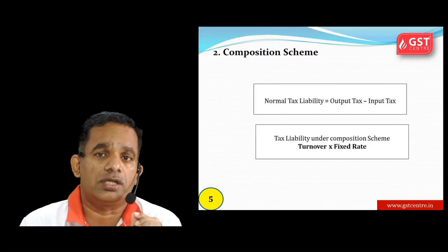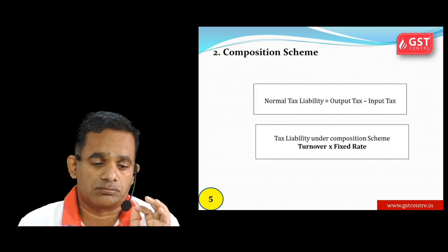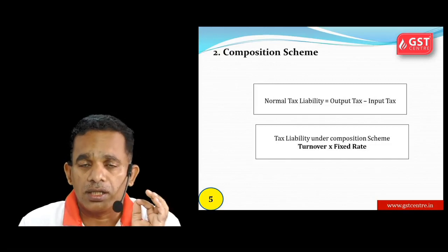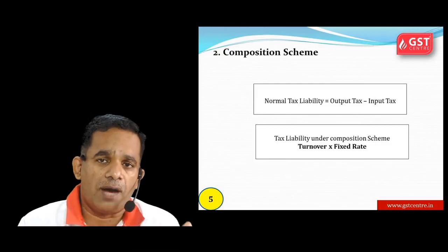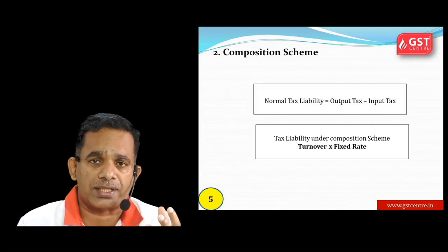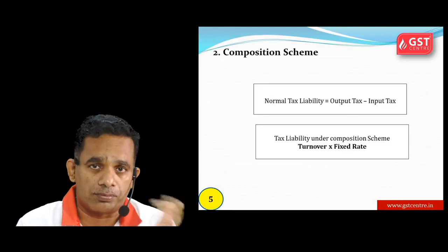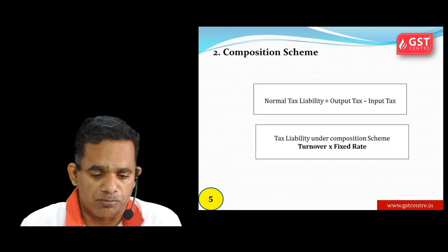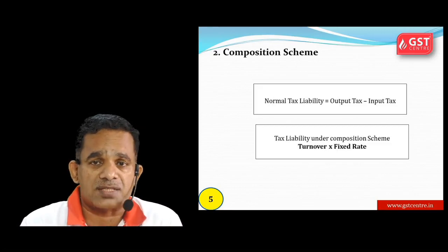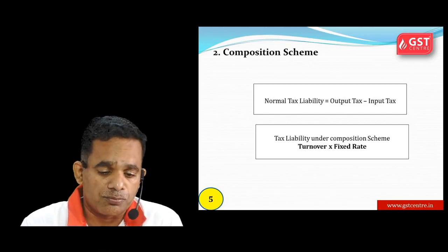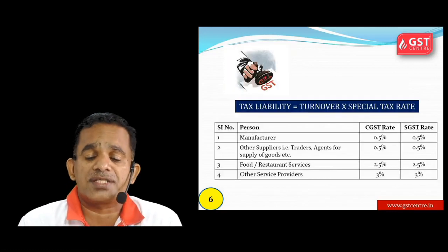अगला है composition scheme under GST. Composition scheme में यह छोटे business persons को applicable है। Normal tax liability का formula है: output tax minus input tax, मतलब आप customer से जो tax collect कर रहे हैं उससे जो tax suppliers को pay कर रहे हैं वो deduct करना है और balance आपकी tax liability बनके आएगी।